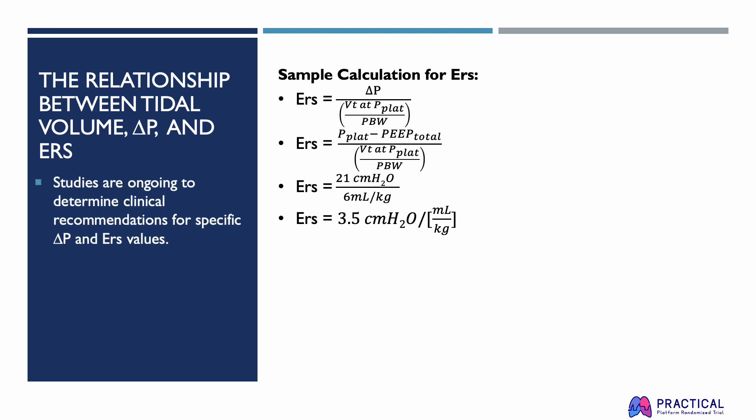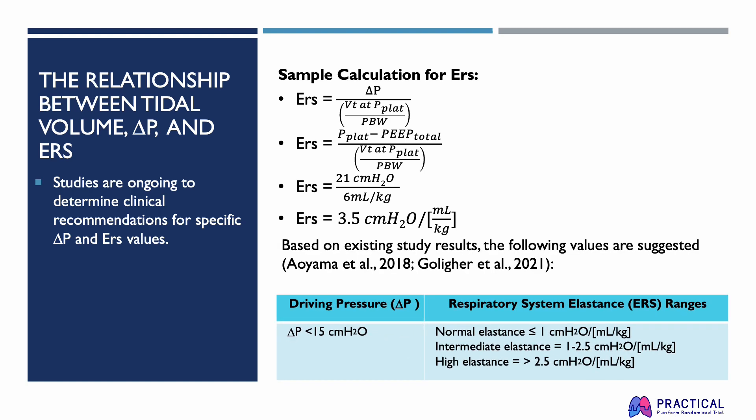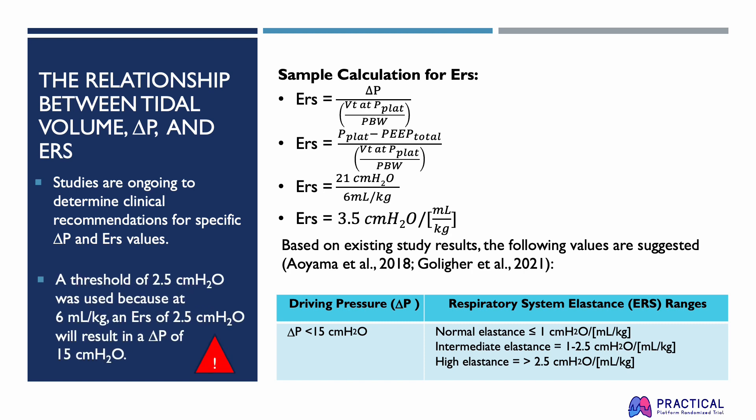Studies are ongoing to determine clinical recommendations for specific driving pressure and ERS values, but based on existing study results, the following values are suggested. For driving pressure, it should be less than 15 centimeters of water. In terms of ERS ranges: normal elastance should be less than or equal to 1 centimeter of water per milliliter per kilogram; intermediate elastance should equal 1 to 2.5 centimeters of water per milliliter per kilogram; and high elastance should be greater than 2.5 centimeters of water per milliliter per kilogram. Note that a threshold of 2.5 was used because at 6 milliliters per kilogram, an ERS of 2.5 centimeters of water will result in a driving pressure of 15 centimeters of water.